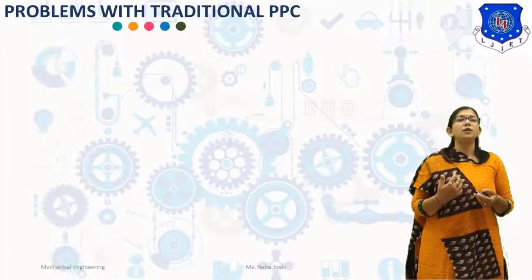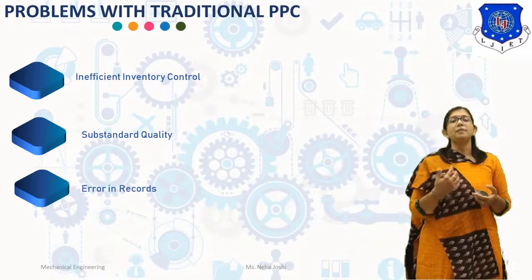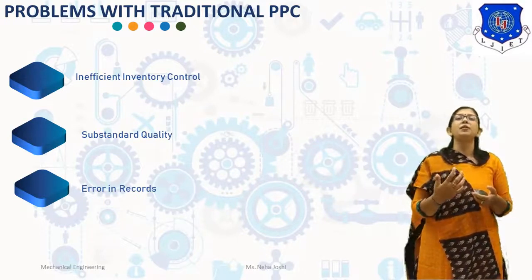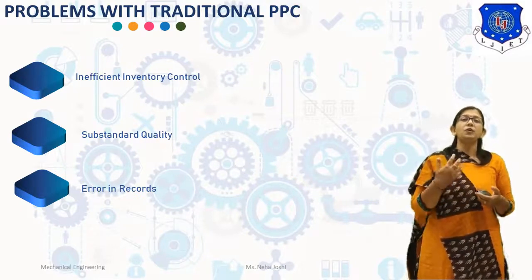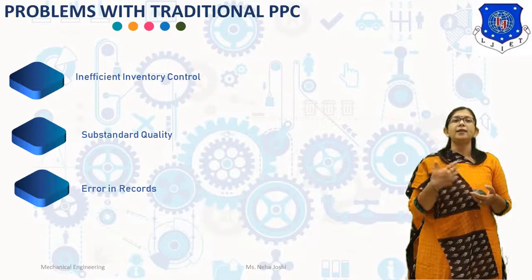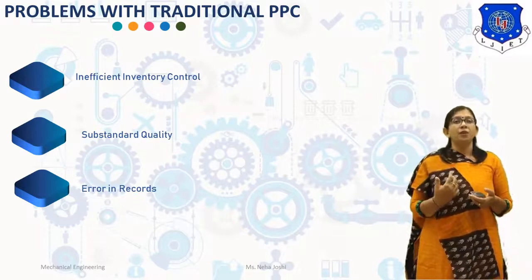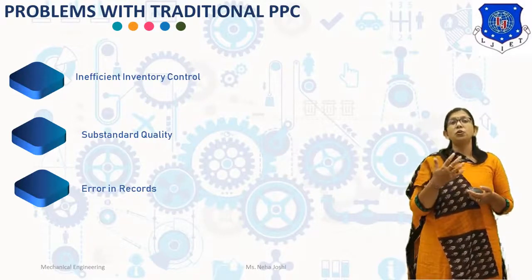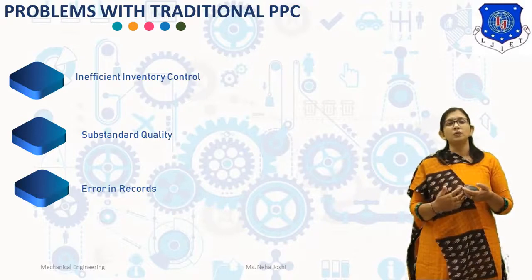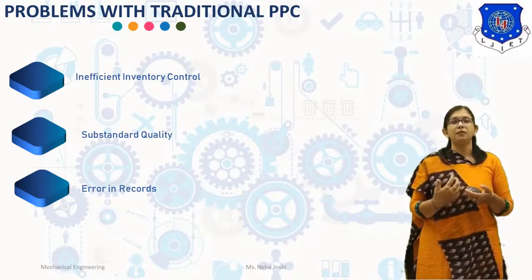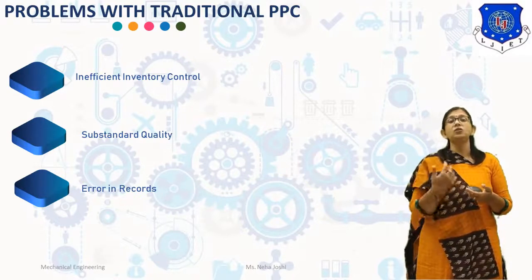The next problem is Disturbance in Process Planning. The plant process planning may be disturbed and superseded by emergency process planning arising due to improper Master Scheduling. Next is Inefficient Inventory Control. Bad production planning and Master Scheduling bring inefficiency in inventory control, affecting both the raw material side and finished production. Next is Substandard Quality. Components produced through faulty production planning, faulty Master Scheduling, and ad hoc process planning may have manufacturing defects, resulting in rejection, rework, and delayed shipment.